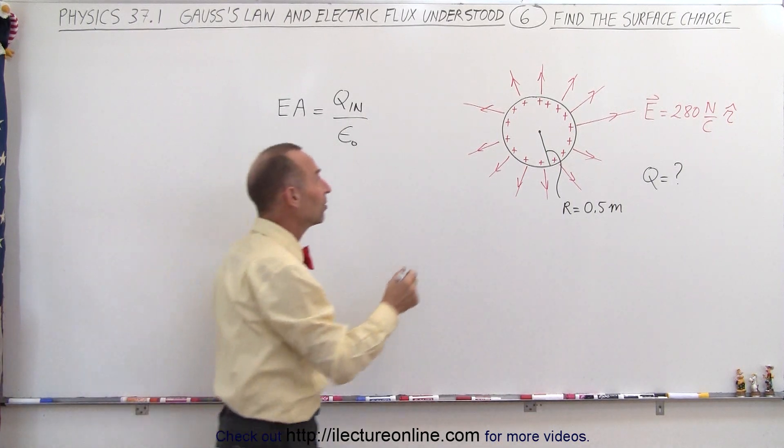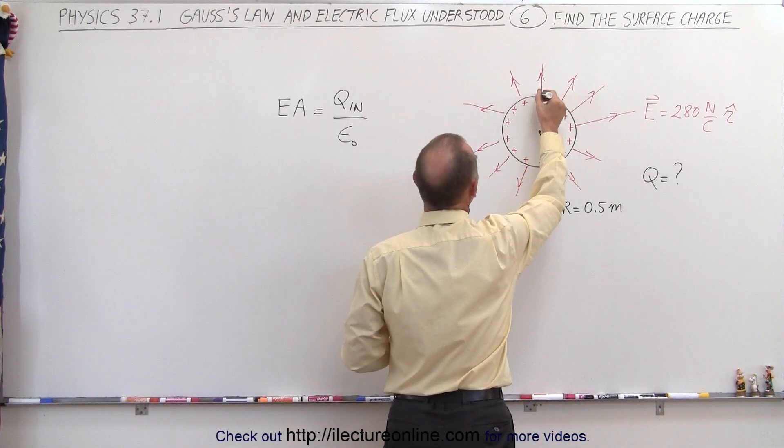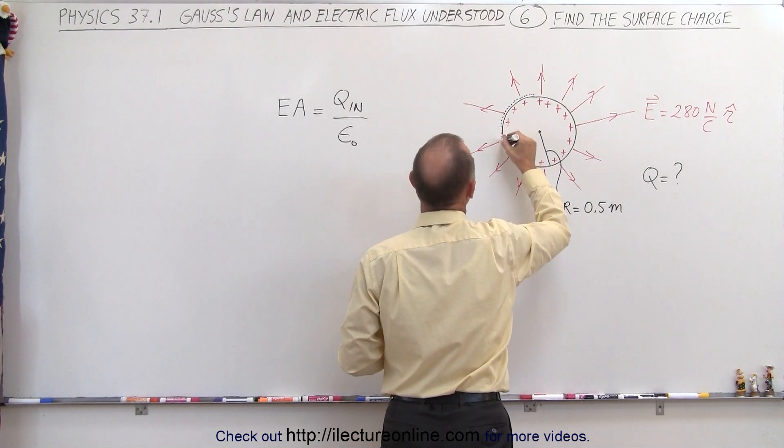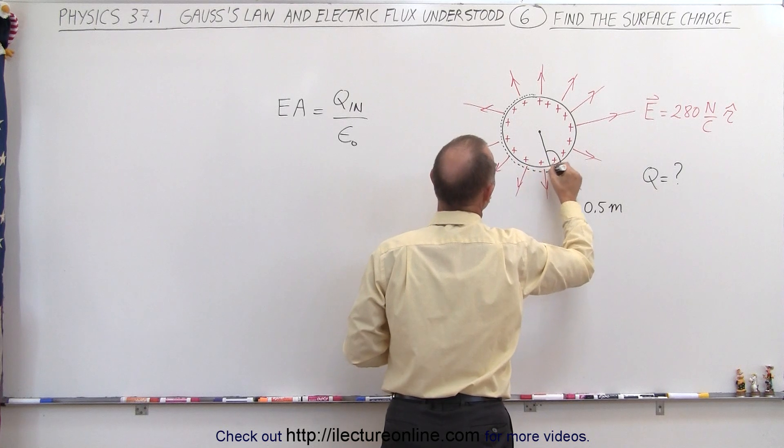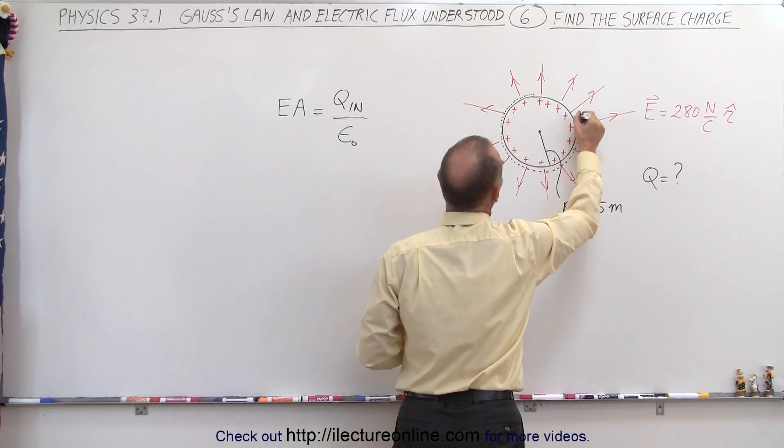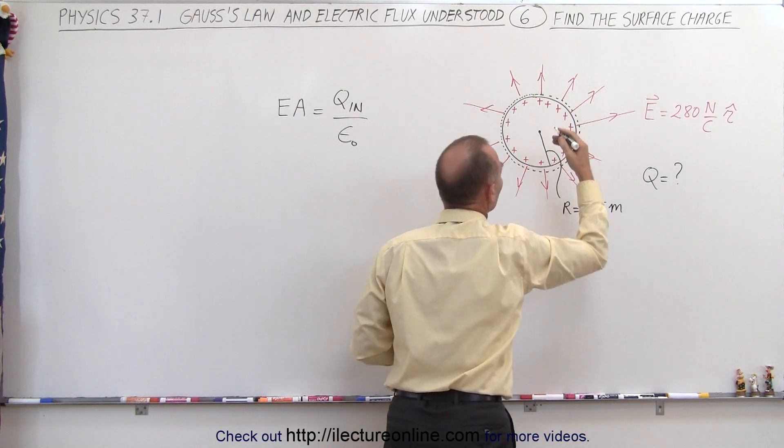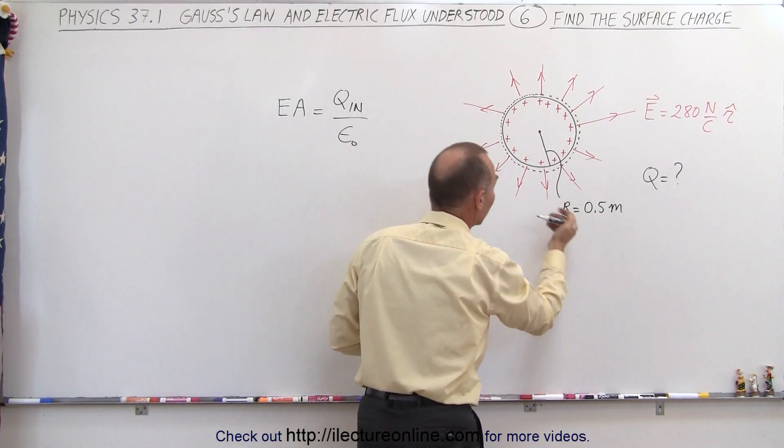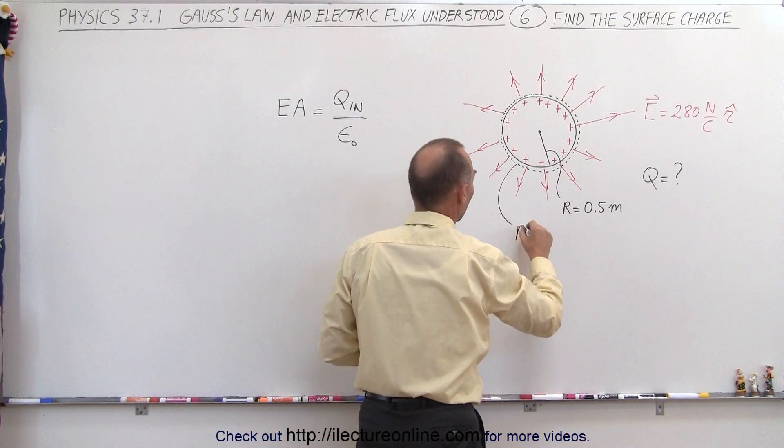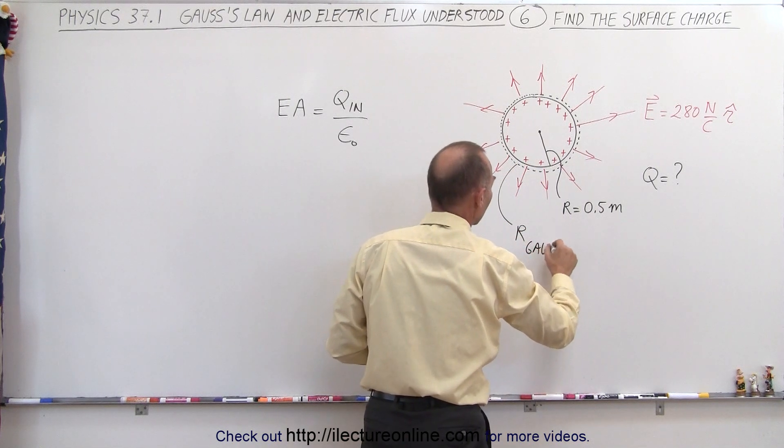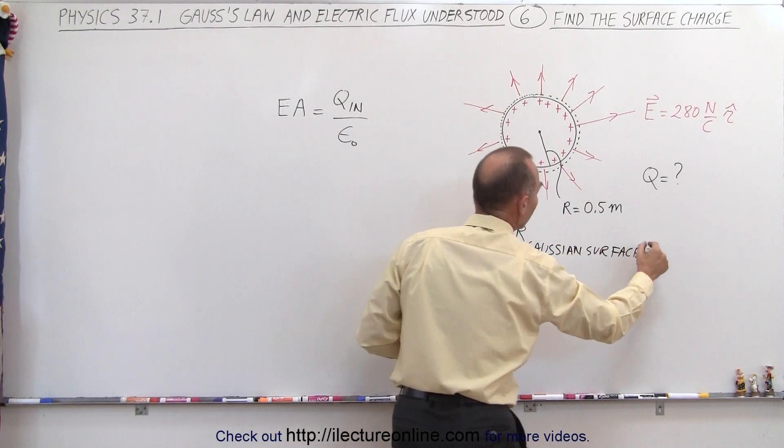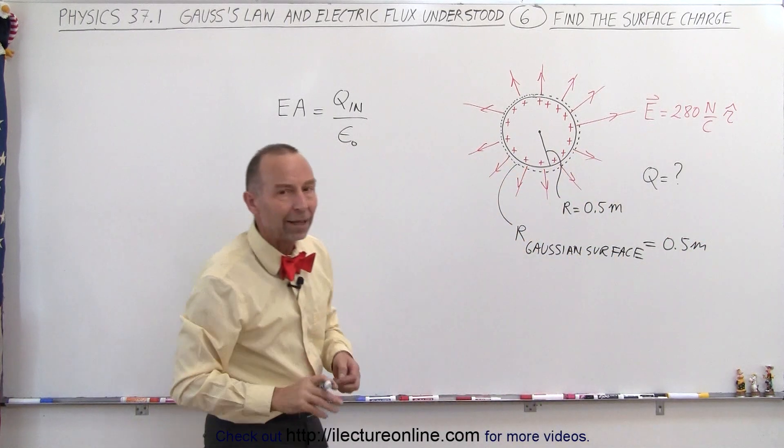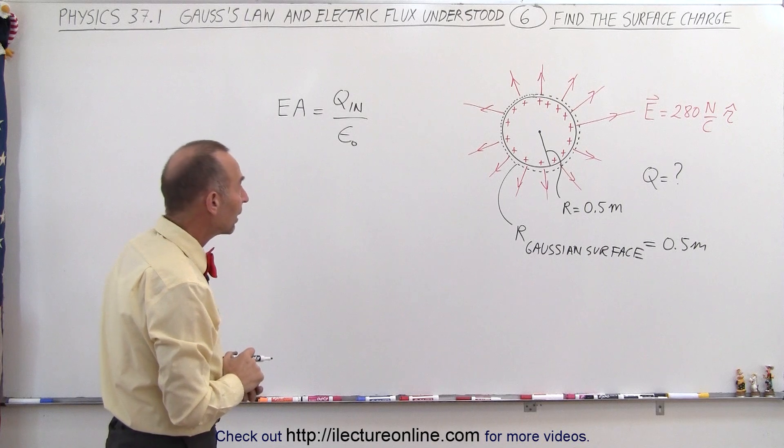Well, what we can do here is set up a Gaussian surface just outside the conducting sphere, so that the radius of the Gaussian surface, for all intents and purposes, is exactly the same as this. So we can say that R of the Gaussian surface is also equal to 0.5 meters, just slightly more than that but not much.